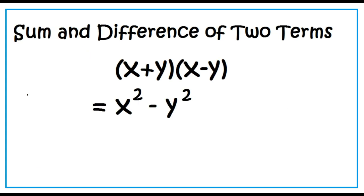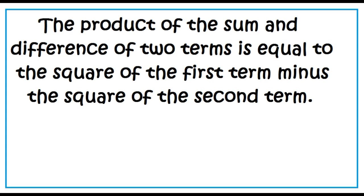Sum and difference of two terms is of this form: the product of the quantity x plus y and the quantity x minus y. Here x is the first term and y is the second term. The product is just the square of the first term minus the square of the second term.